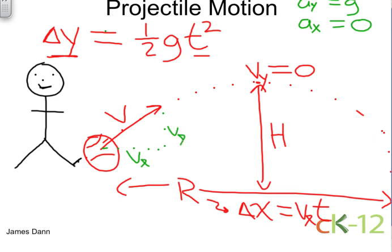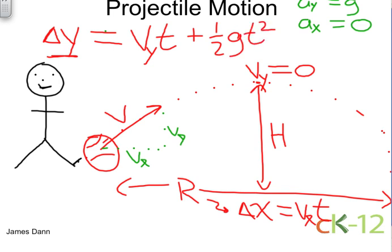So, we should fix this equation up to show the full equation for the change in Y, which is the Y velocity times time plus one-half GT squared, where G is the acceleration of gravity. And for our coordinate system here, it would be negative 10 meters per second squared.